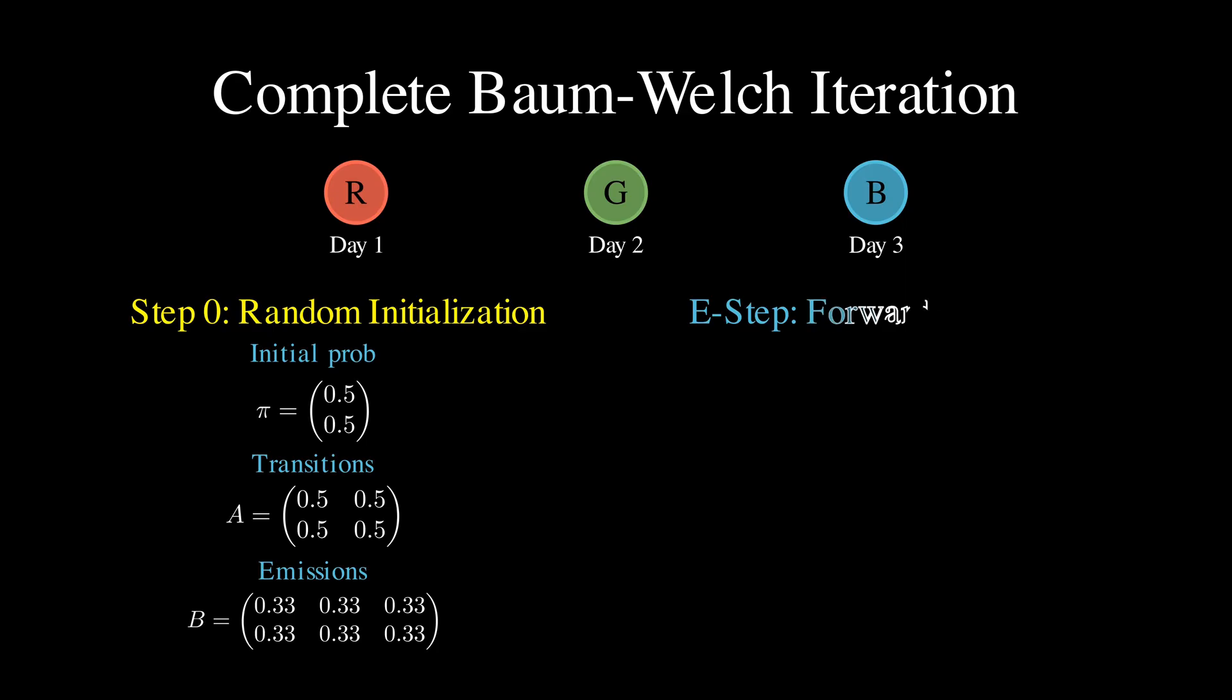In the first E-step, we run forward-backward using our current parameter guesses to compute gamma and xi for all time points. Even though our parameters are random, forward-backward still gives us some probability distribution over the hidden states based on what we've observed.